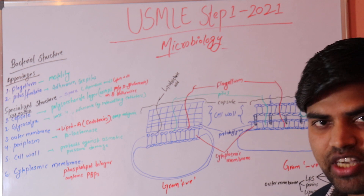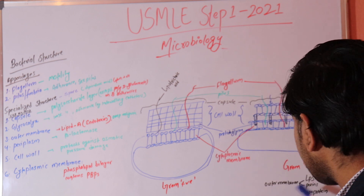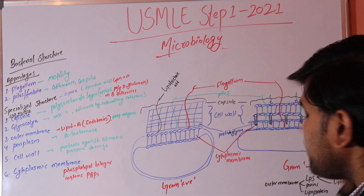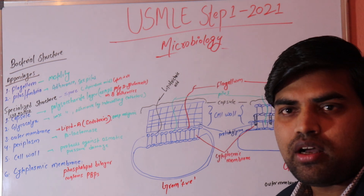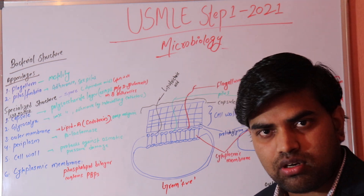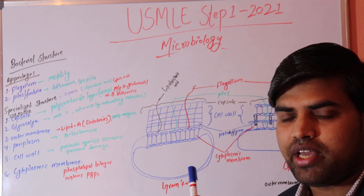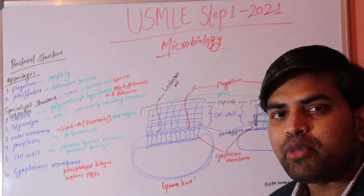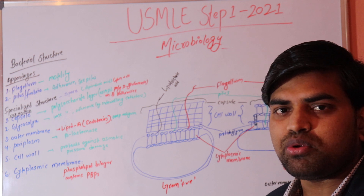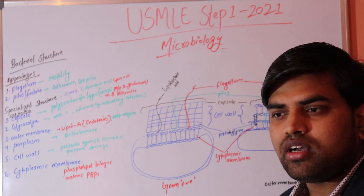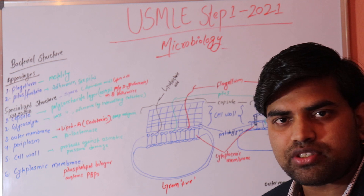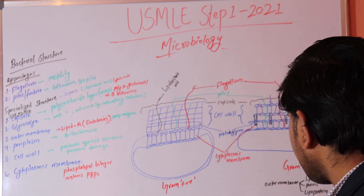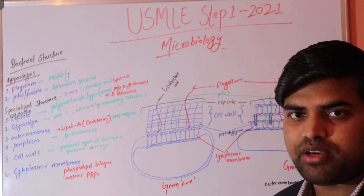The outer membrane also contains LPS — lipopolysaccharide — which has three parts: O antigen, core, and lipid A. Lipid A is responsible for endotoxic shock. This only occurs in gram negative bacteria. Lipid A induces TNF-alpha and interleukin-6, which are responsible for the development of endotoxic shock, a mechanism we'll discuss further when covering toxins.